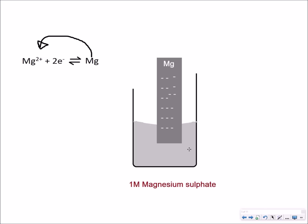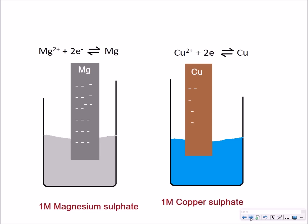Now how does this compare to another metal such as copper? We can quite clearly see from here that magnesium is more negative than copper. For copper, the equilibrium is shifted slightly more to the right, so it likes to hang on to its electrons.